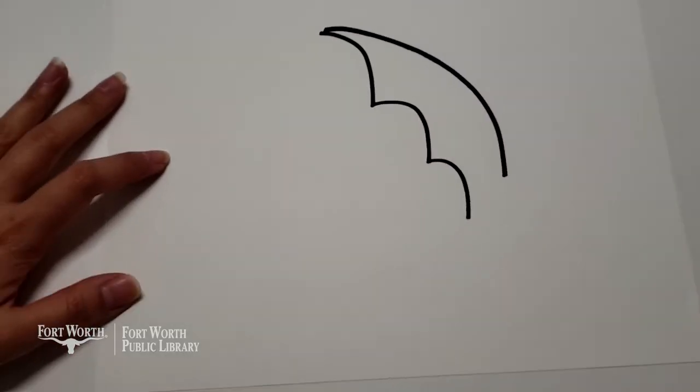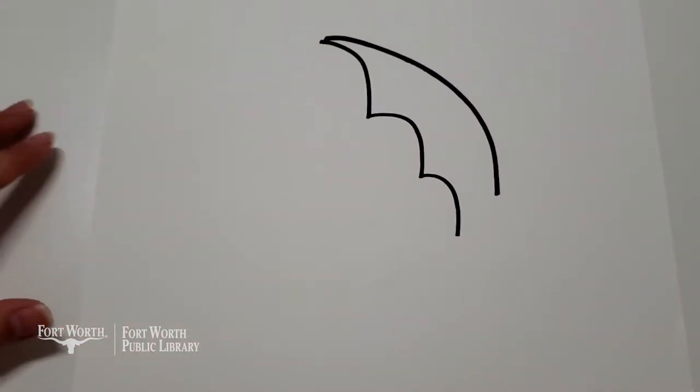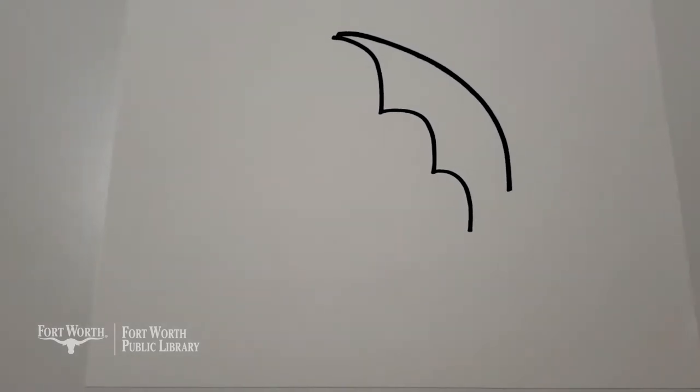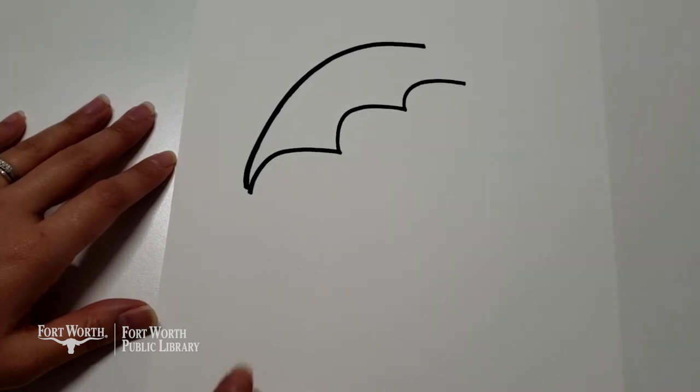So I'm going to show you my example. So I have my shape. Let's think of all the ways that we can finish this shape and remember it is not a bat. Okay, so I'm gonna grab my colored pencils.